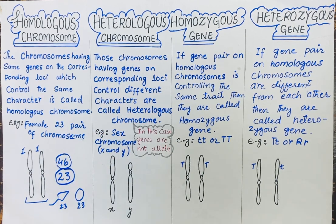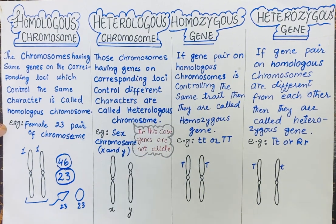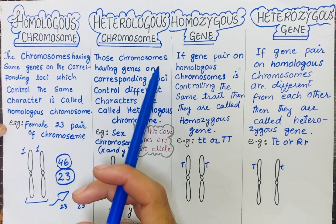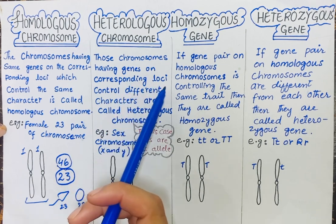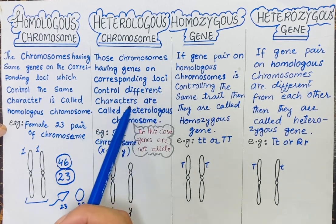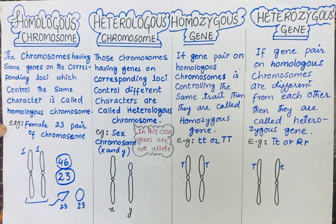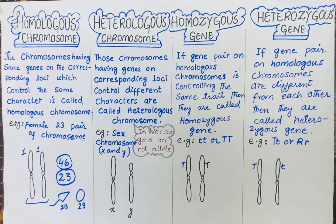Now why does a male have heterologous chromosomes? We can see that a male has a chromosome which is a heterologous chromosome. The definition is: those chromosomes having genes on corresponding loci that control different characters are called heterologous chromosomes. They can form a pair, but the corresponding genes will be different, so we call it a heterologous pair or heterologous chromosome.